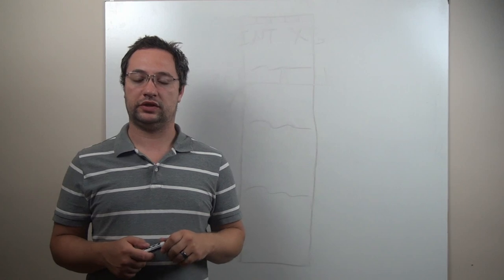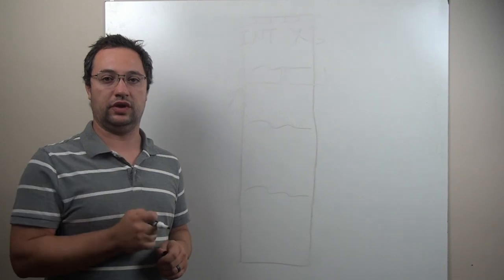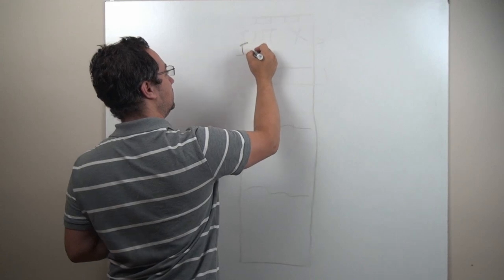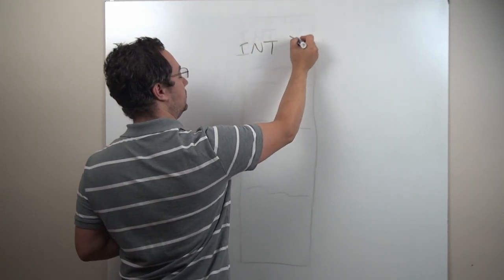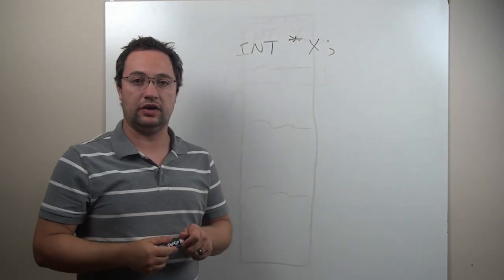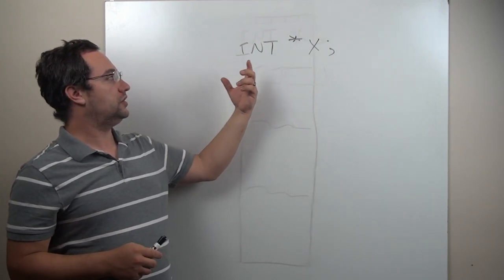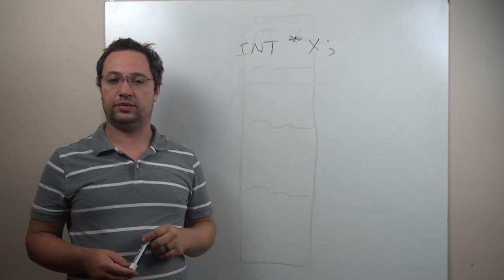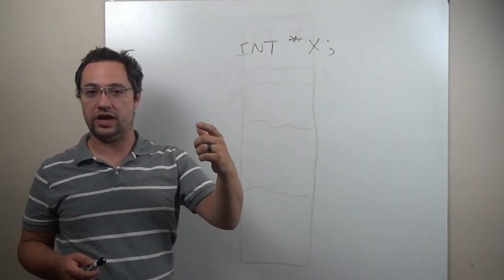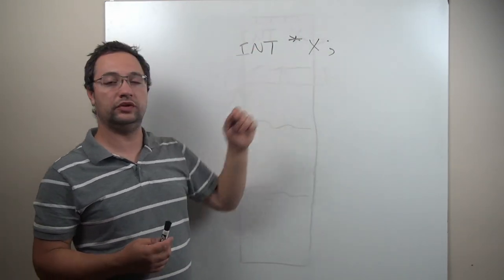How do you declare a pointer? A pointer is declared very simply, similar to how we declared the integer: you go `int`, then a star, then `x`. And that's it — now you have declared a pointer. This pointer x stores the address of an integer. That's exactly what we've declared here.